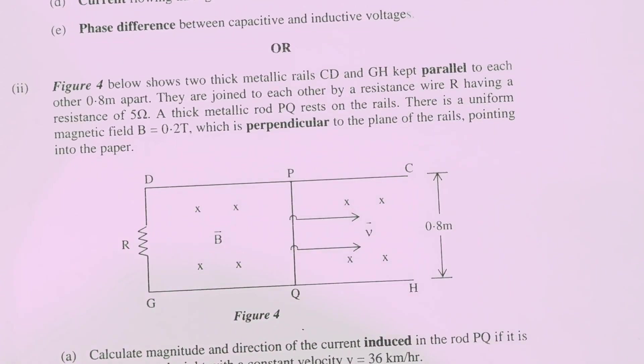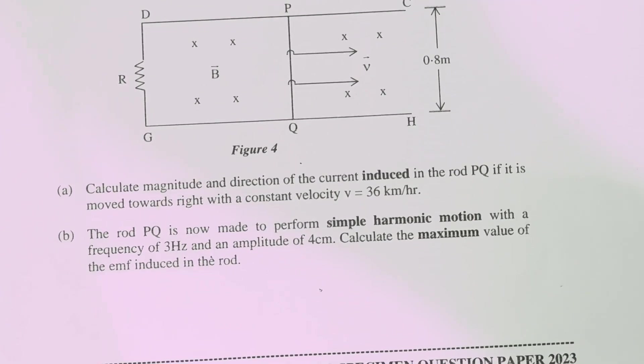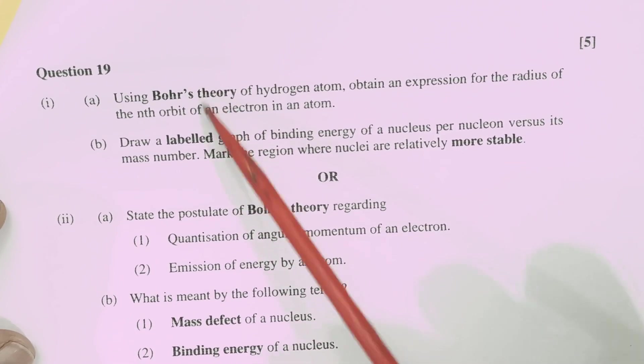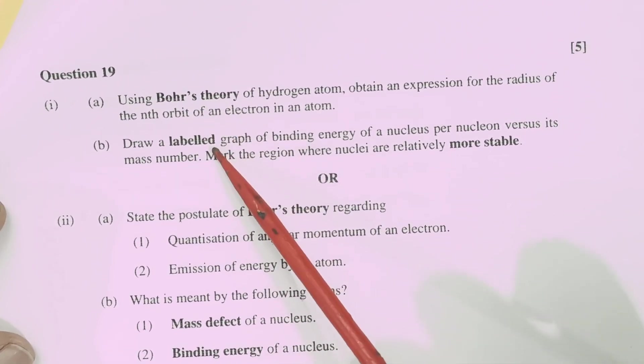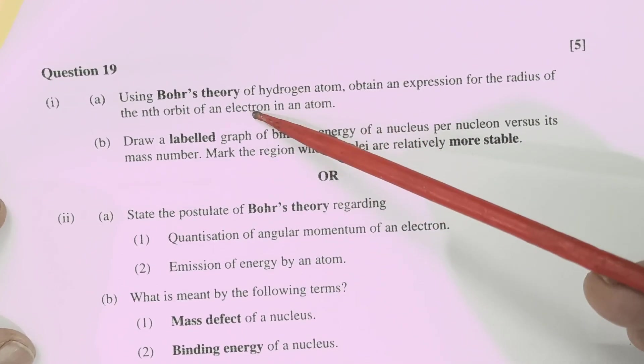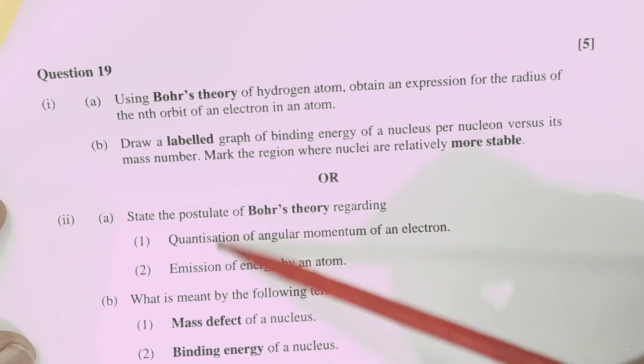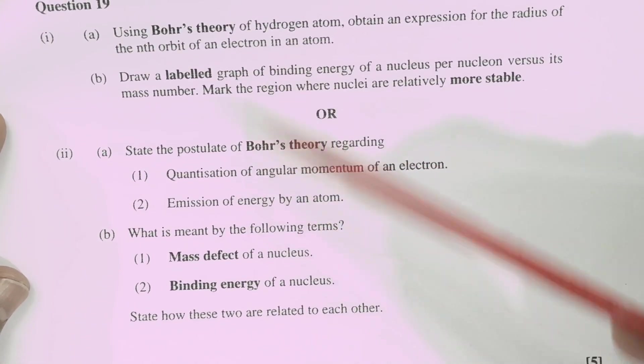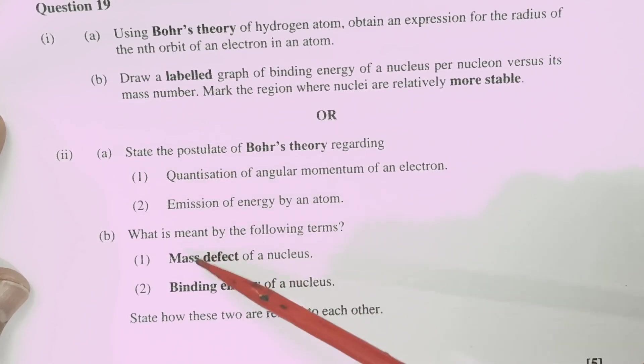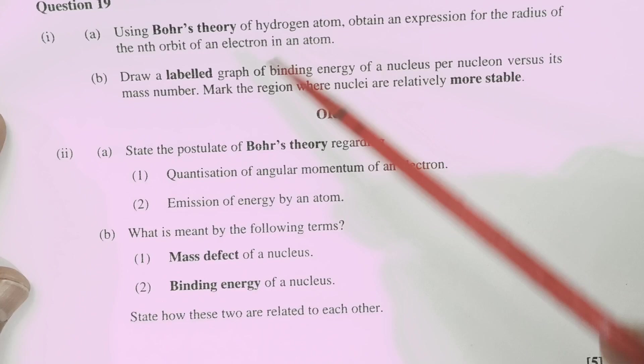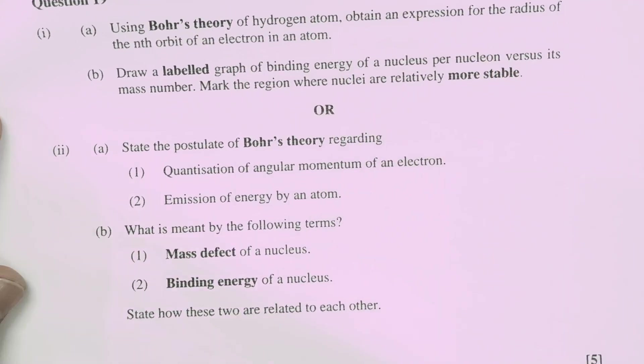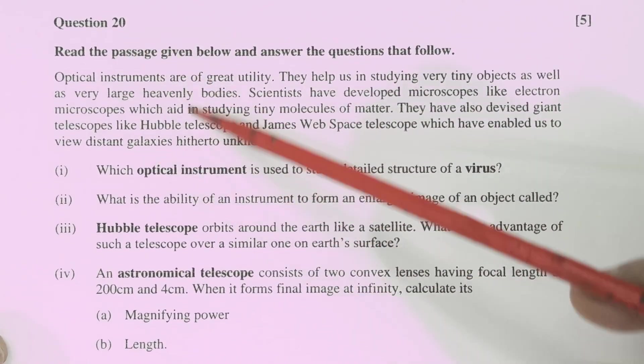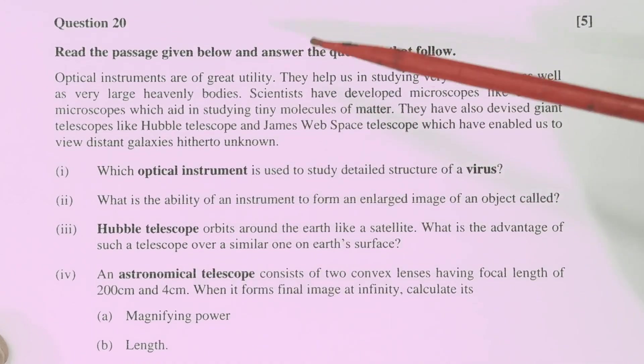Same way in question number 19. One question is from modern physics and nuclear physics finding energy and Bohr's theory. These two are from modern physics and nuclear physics. Either you attempt this question or from the same Bohr's theory you can attempt this question. Nuclear physics question. So the two questions are from the same topic modern physics and nuclear physics. These are long answer type questions. And from now onwards you will have a question which will have a paragraph and the questions based on that paragraph.